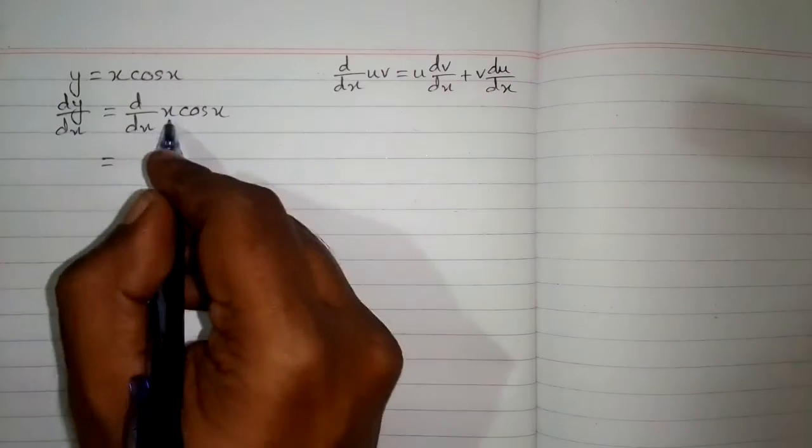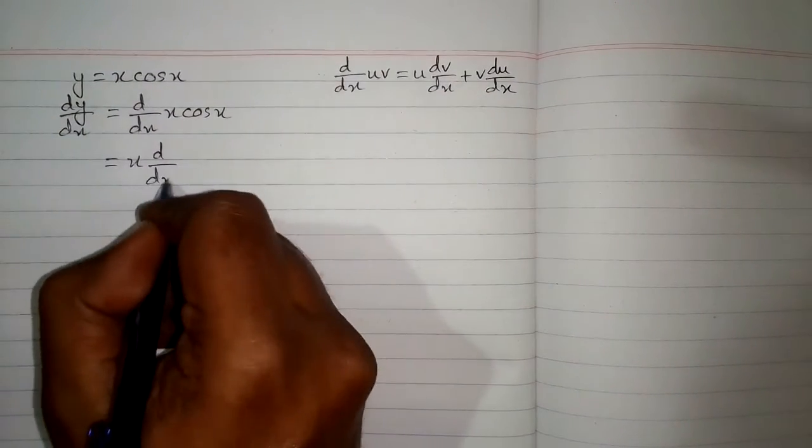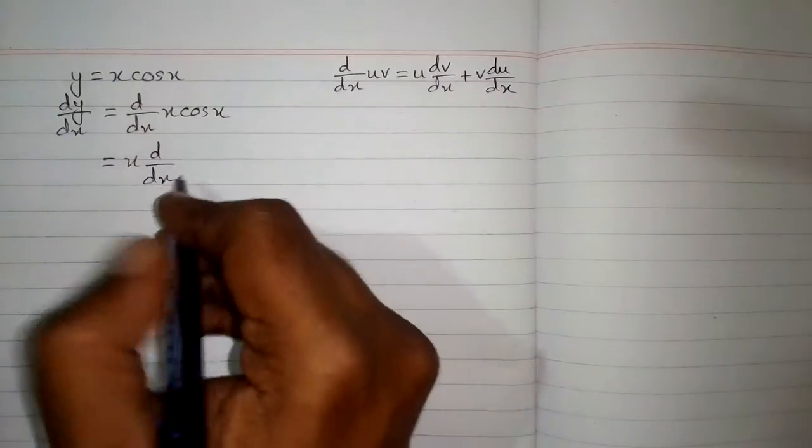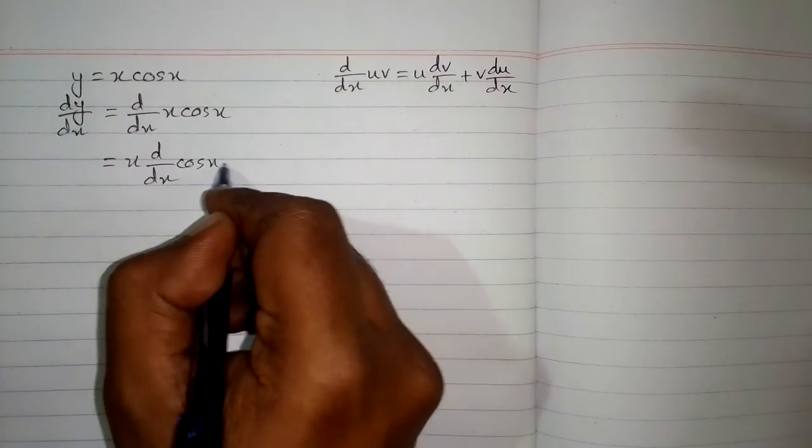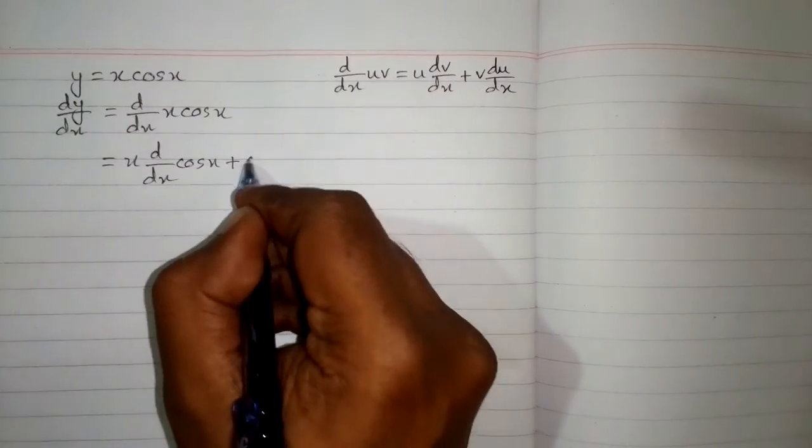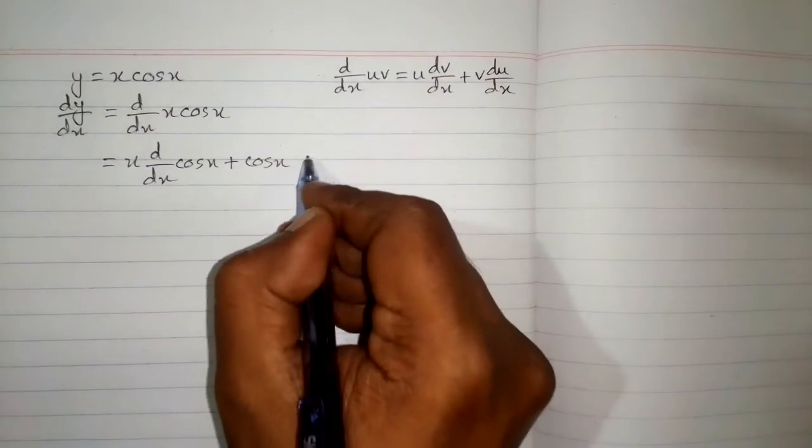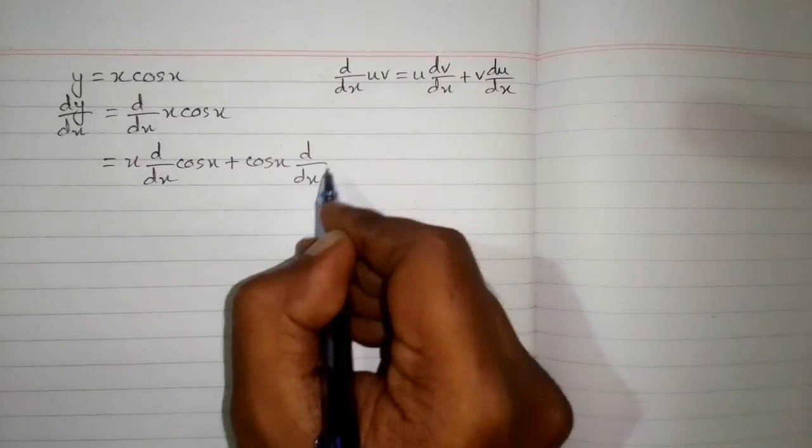Now first we will write u which is x then the derivative of v. v is cos x so we will write cos x over here then plus sign then we will write v. v is cos x and the derivative of u and u is x.